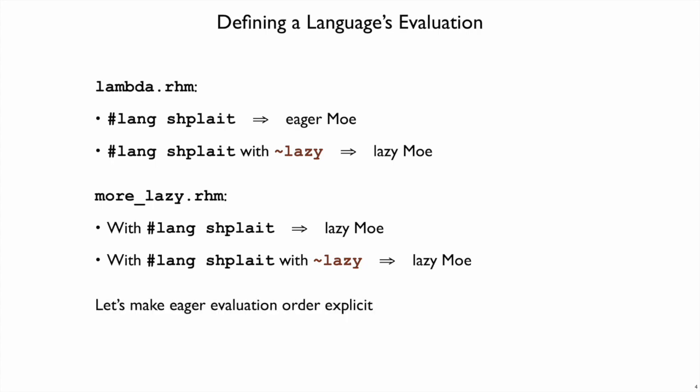So what we want to do now is make the same sort of explicit choice in our interpreter. We'll implement eager evaluation order explicitly. It won't matter whether you run this new interpreter in the eager or lazy variant of shplait, because we will have made it explicit and implemented it ourselves, and therefore hopefully understood it ourselves as well.